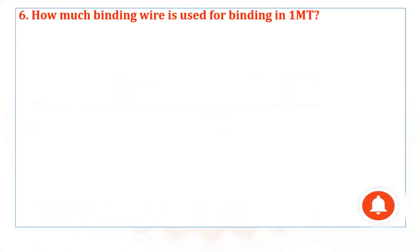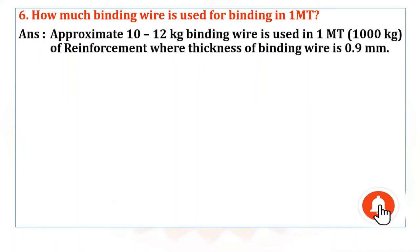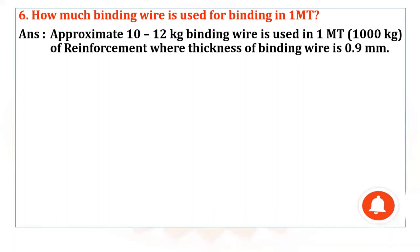Coming to the next question: How much binding wire is used for binding in 1 MT? Approximately 10 to 12 kg of binding wire is used per 1 MT, that means per 1000 kg of reinforcement. The thickness of the binding wire is 0.9 mm.